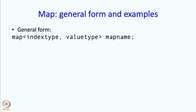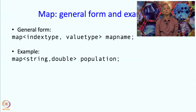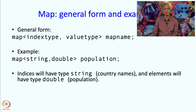Let us talk about maps - the general form and some examples. If I want to define a map, I write the keyword map, then in angle brackets the two template arguments: the index type and the value type, and then I give the map name. As an example I can write map<string, double> population. This is useful for the thing we just said - given a country, get its population. The indices will have type string, so I can have country names, and elements will have type double for population.